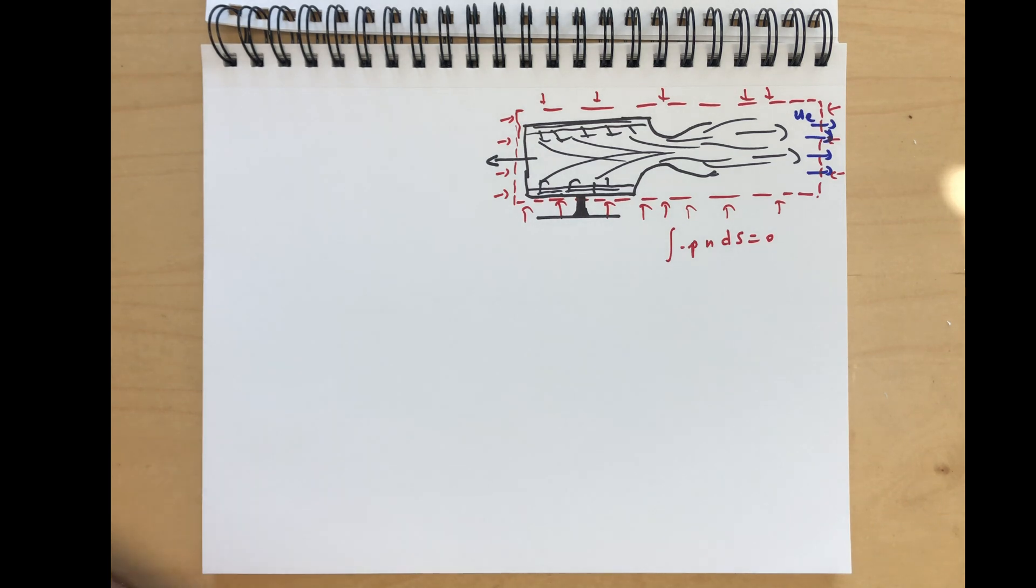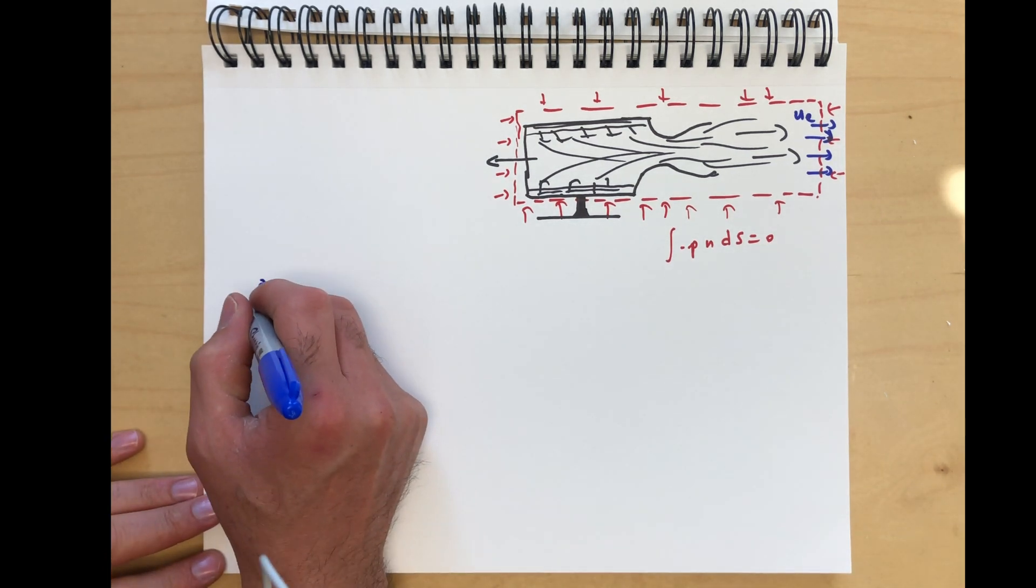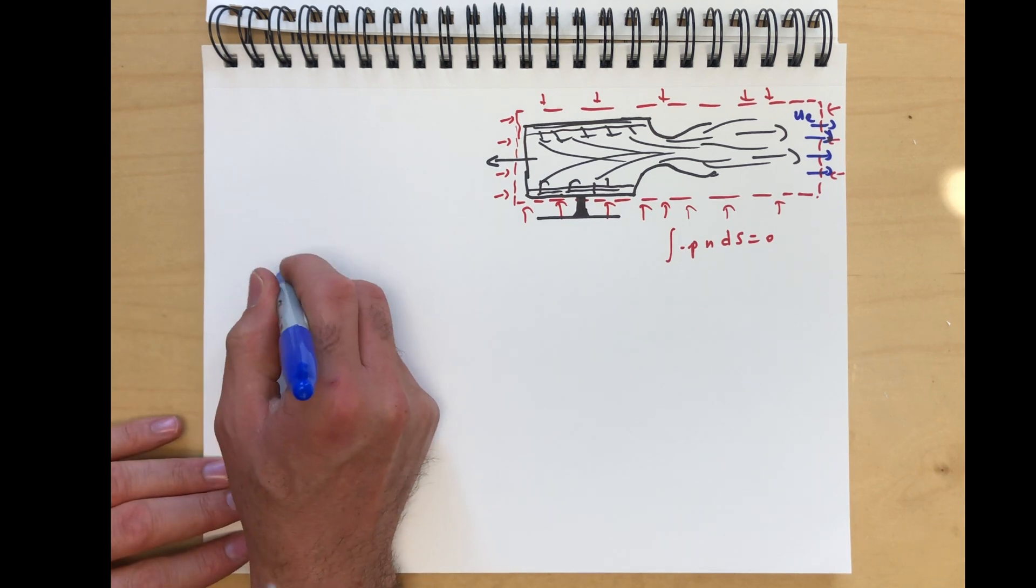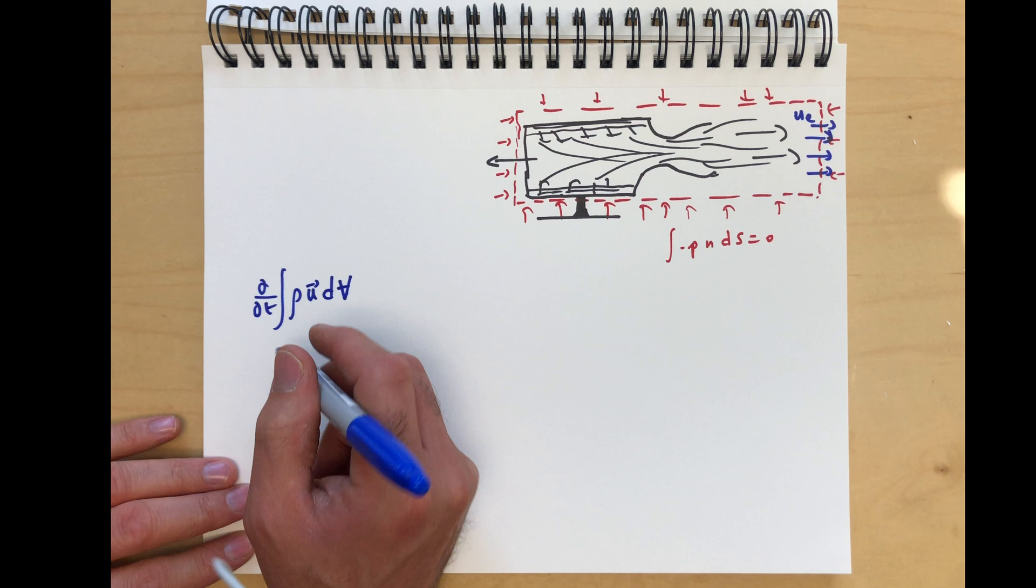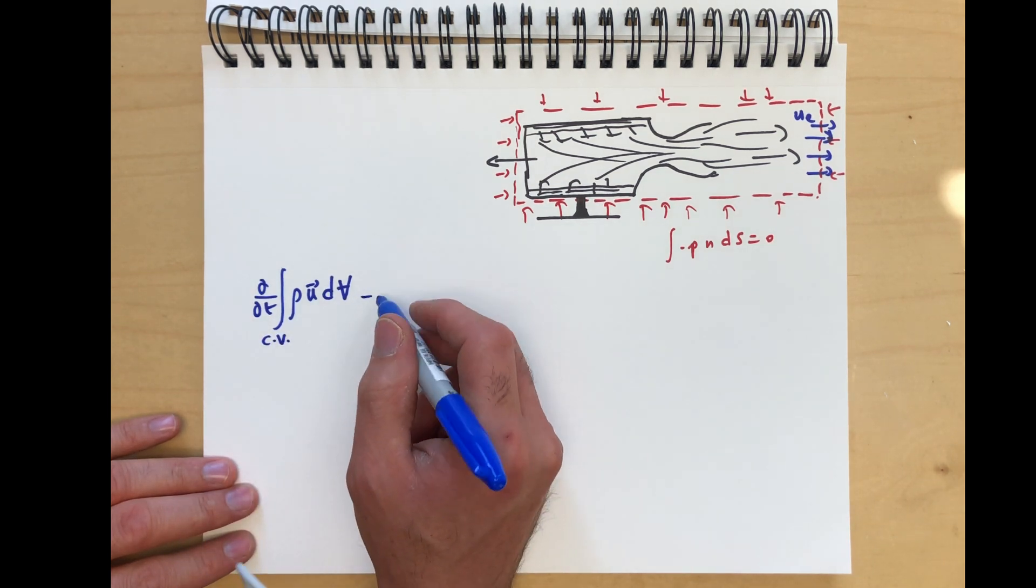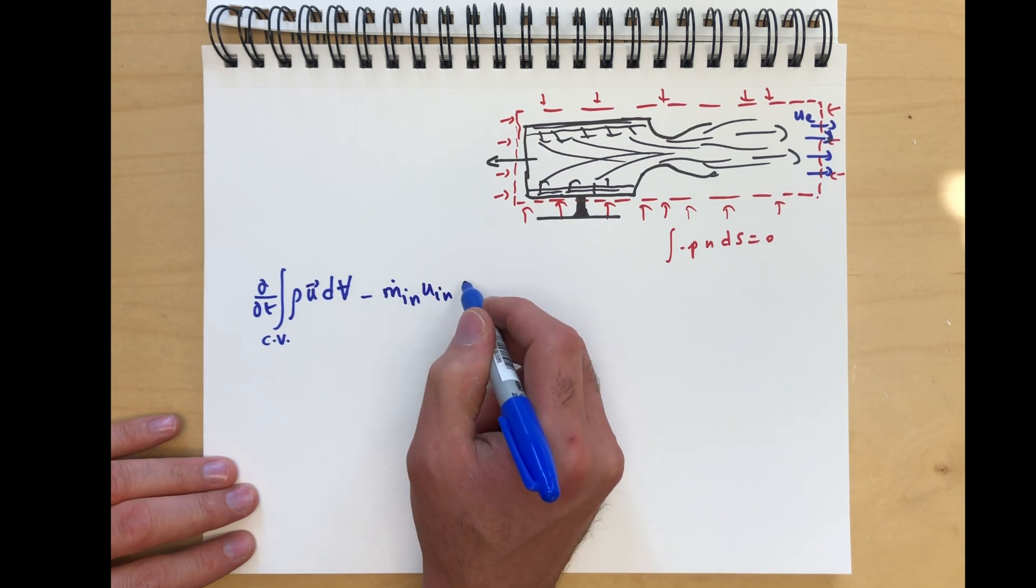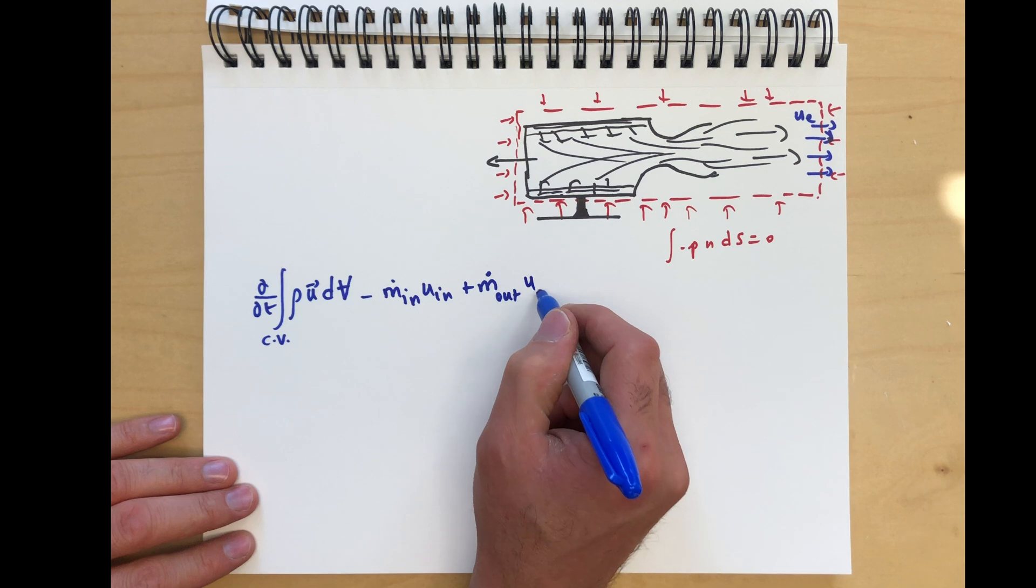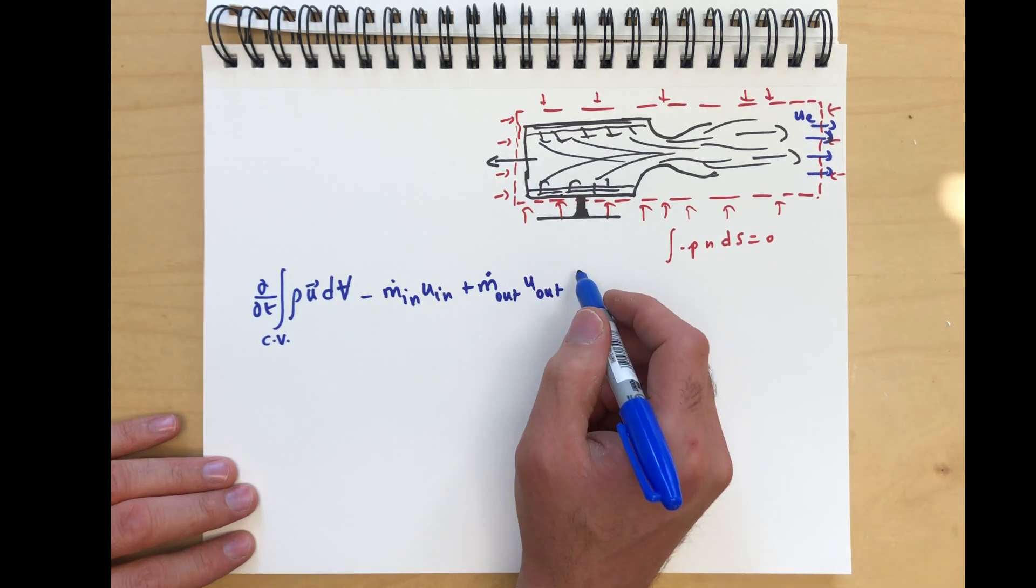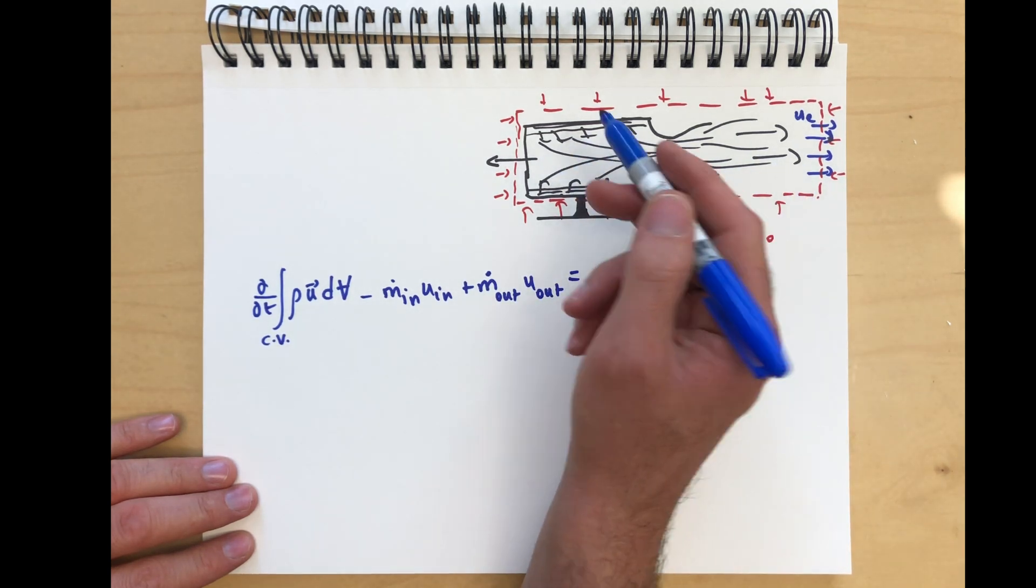An application of the linear momentum balance tells us that d/dt of the integral of ρu dV over the control volume, minus ṁ_in u_in plus ṁ_out u_out is equal to the force exerted.